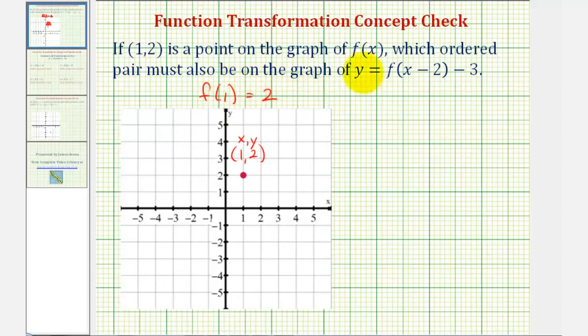We want to find a point that would be on y equals f(x - 2) - 3. There are a couple ways to determine what point must be on this new function. One way would be to recognize the translations based upon this function notation.